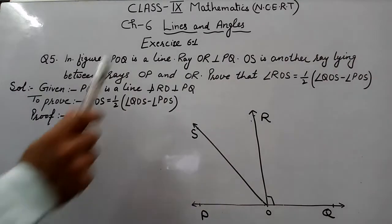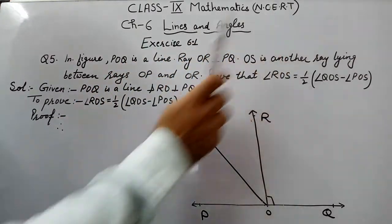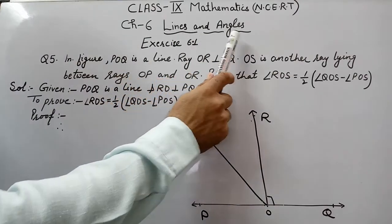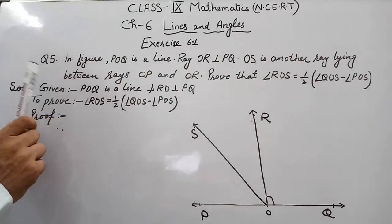Let's start our today's work. This is Class 9 Mathematics NCERT, Chapter 6: Lines and Angles, Exercise 6.1, Question number 5.